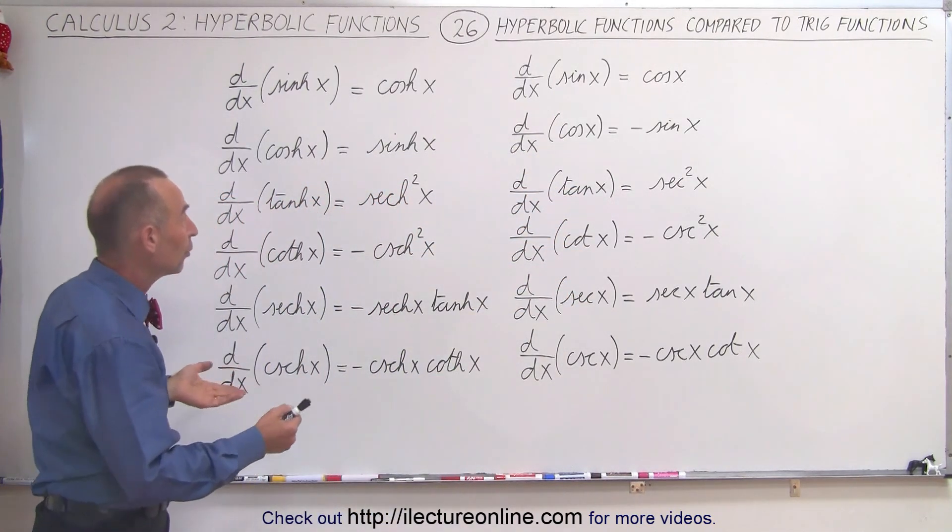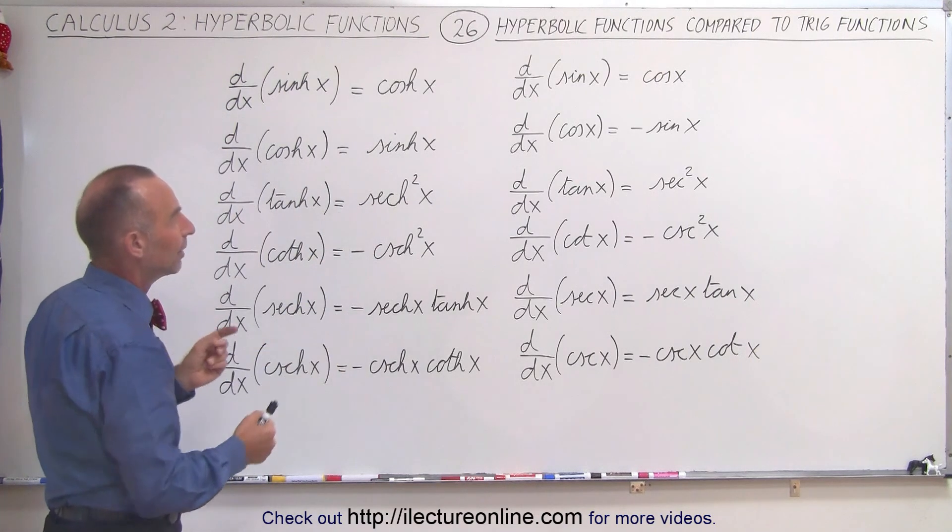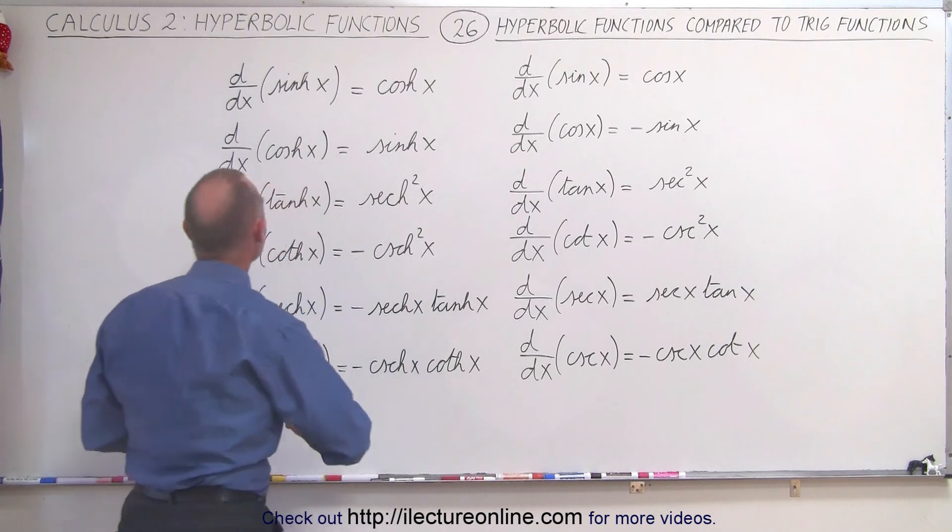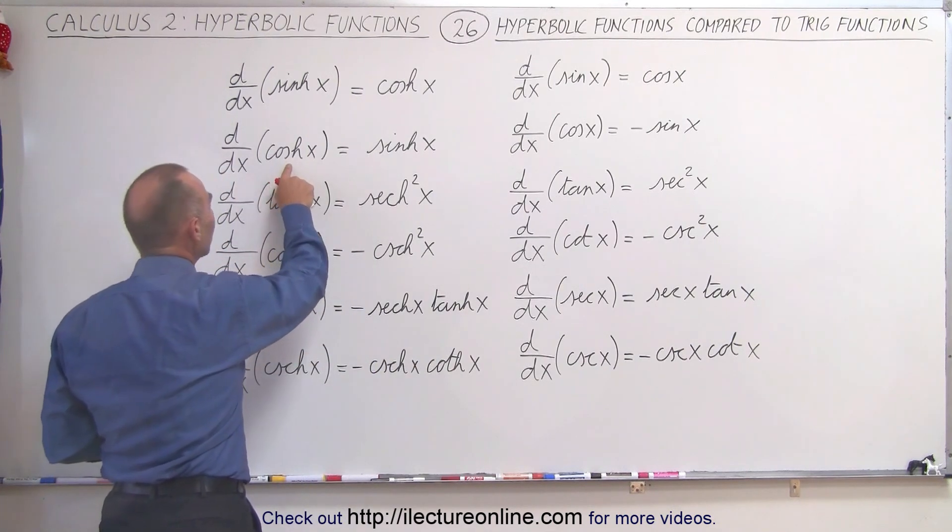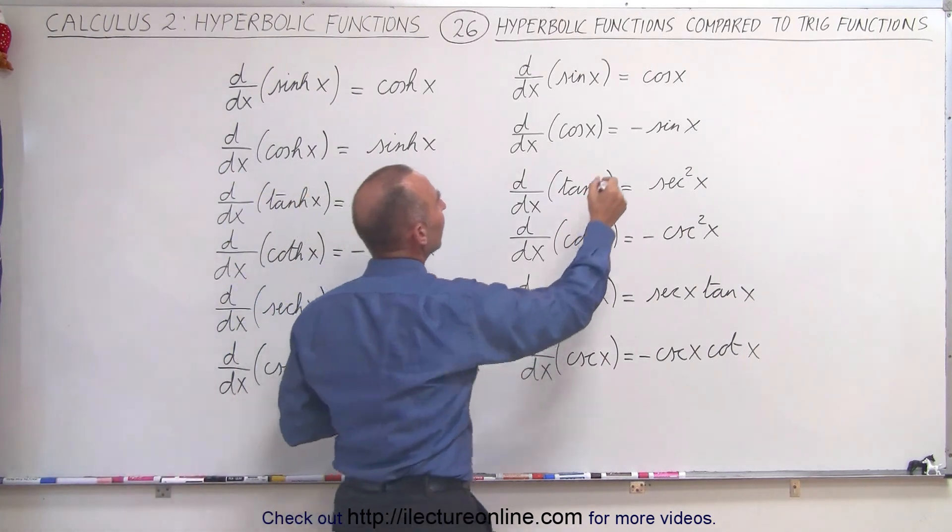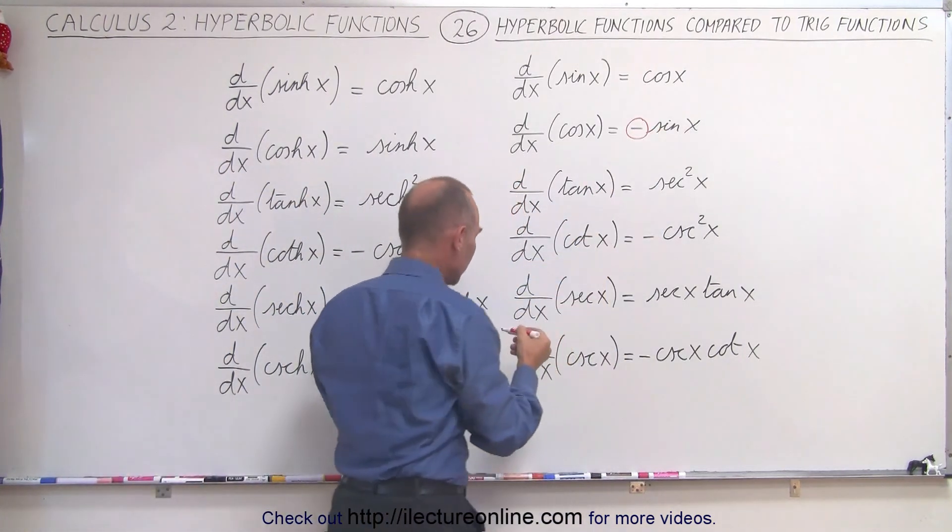Now when we take the derivative, notice it looks almost identical except for two things. What are the two things? Well, when we take the derivative of the hyperbolic cosine, we get the positive hyperbolic sine. That is not the case in the case of the trigonometric function.